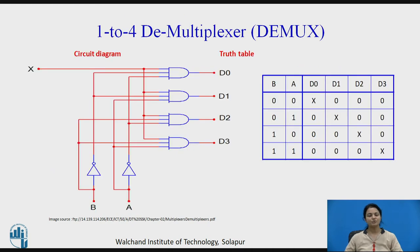Here we see the 1-to-4 demultiplexer circuit diagram. X is the input; D0, D1, D2, and D3 are the outputs, and the truth table is shown. When both select lines are 0-0, D0 is selected — A and B are inverted and fed into the AND gate, so the AND gate receives 1, 1 along with input 1, and the result goes to D0. When B=0 and A=1, D1 is selected. When B=1 and A=0, D2 is selected. And when both inputs are 1-1, D3 is selected.